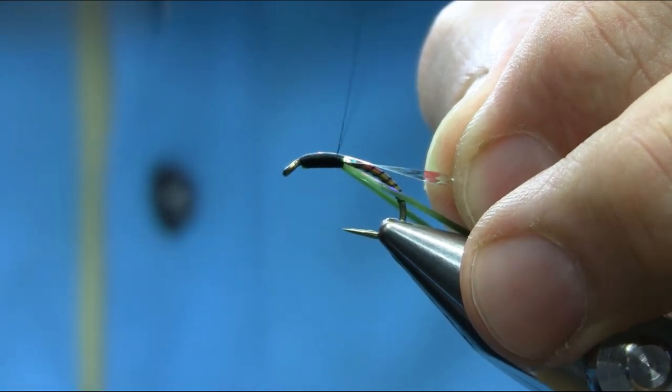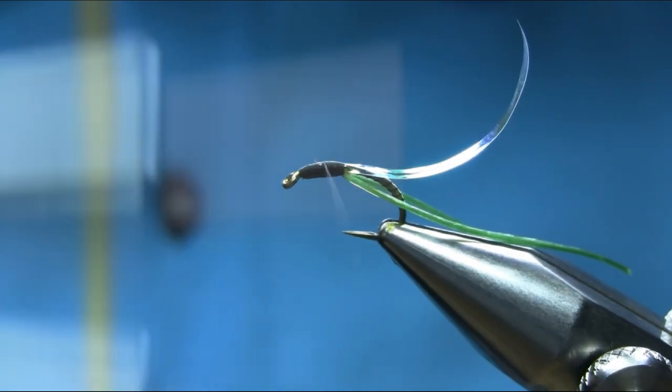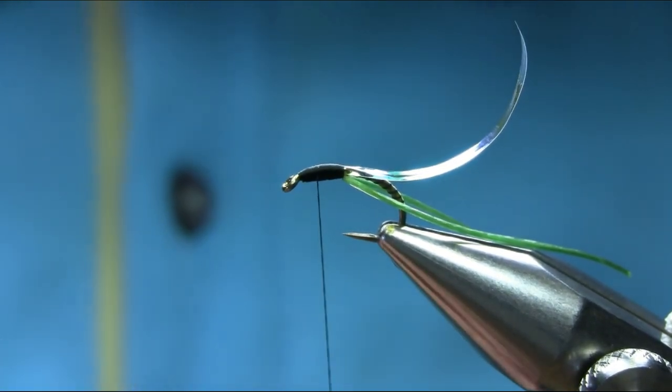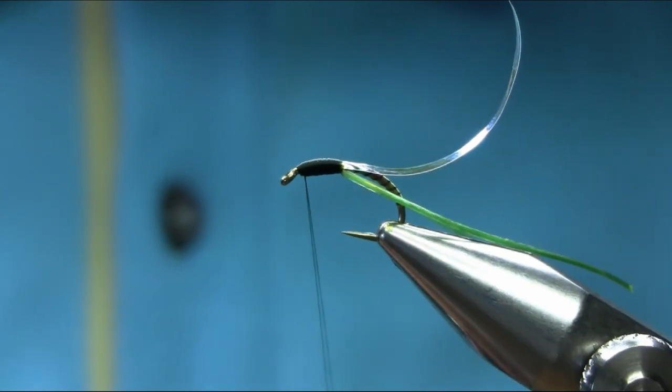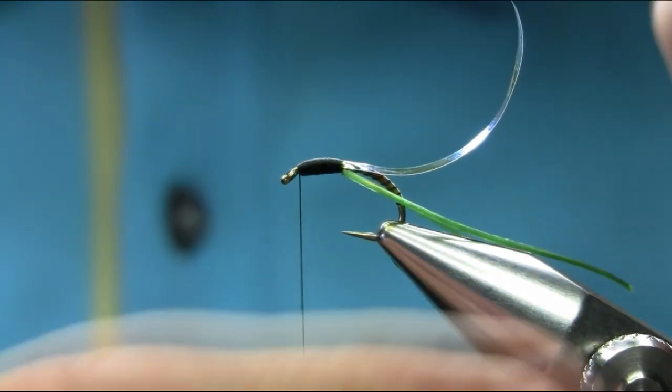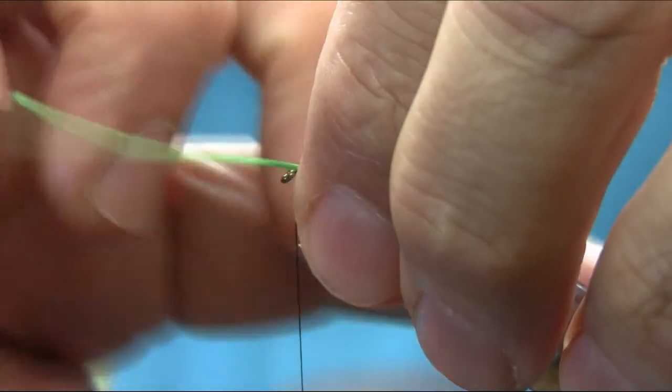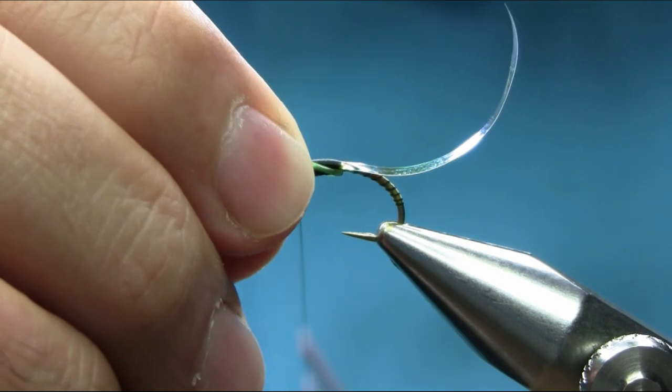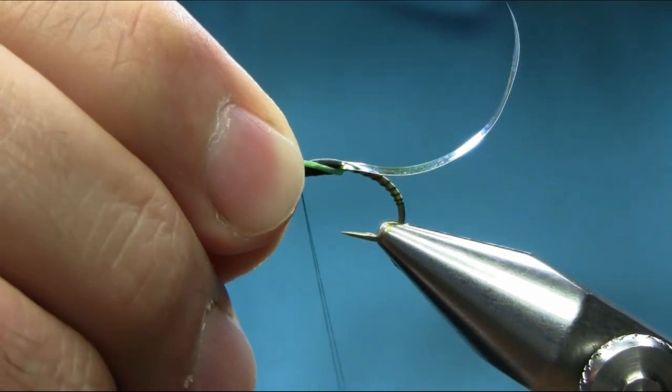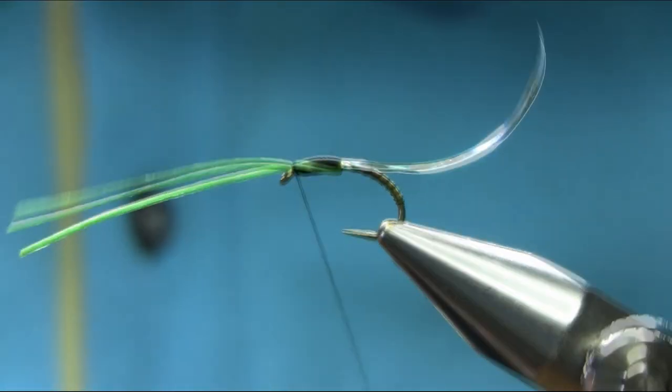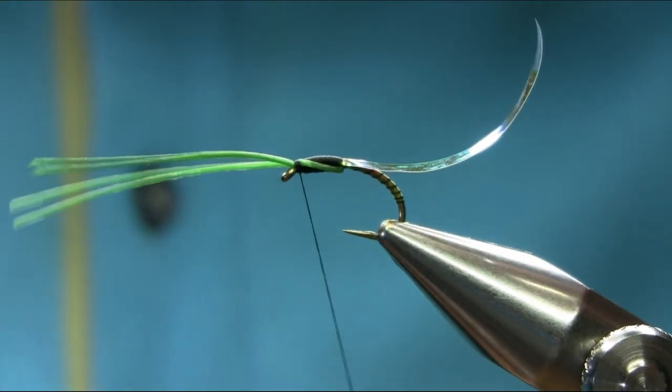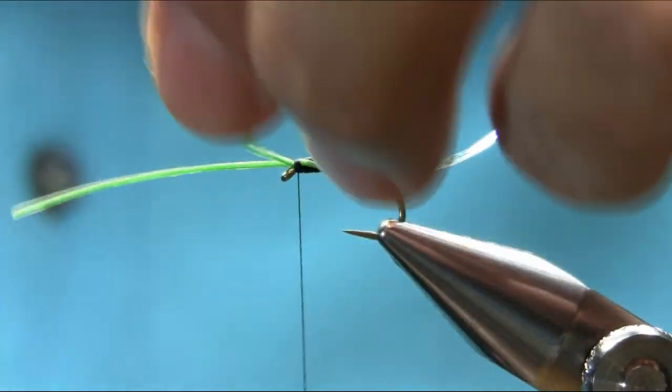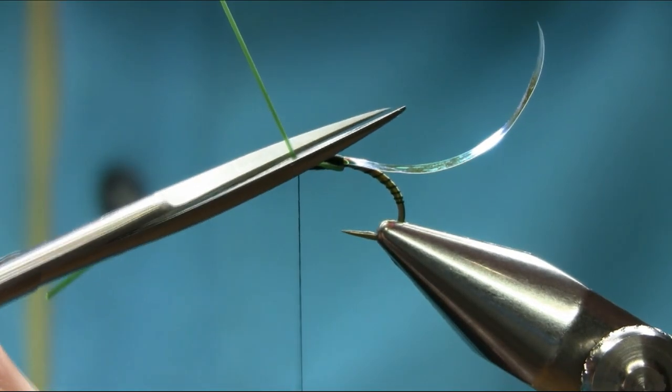It has to be right in the middle. Everything has to look nice—smooth head. Now bring both of these cheeks forward and catch them. Secure them properly and cut them off one by one, very close, just to make a nice head.